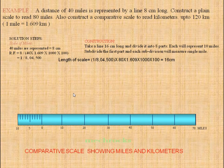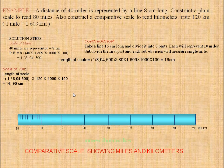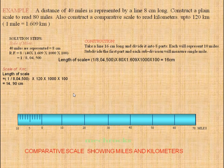Now we have to draw the kilometer scale above the mile scale. The RF is the same for both the kilometer scale and the mile scale. We have to find the length of scale: length of scale equals RF into maximum length. The maximum length given is 120 kilometers, which we convert into centimeters: 120 × 1000 × 100. So length of scale = (1/84,500) × 120 × 1000 × 100. We get 14.9 cm.